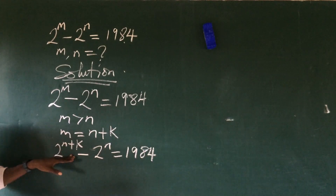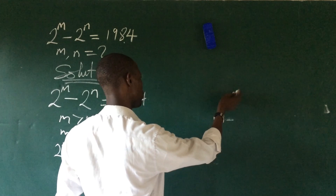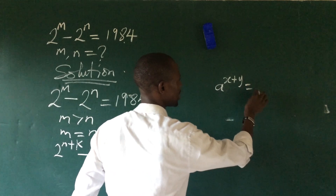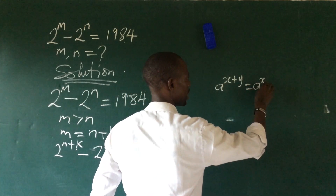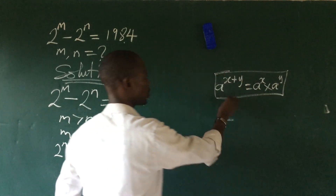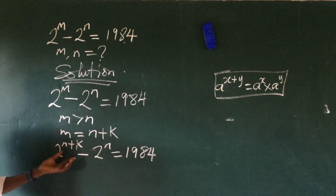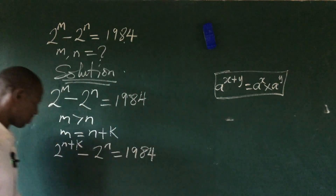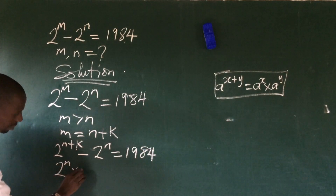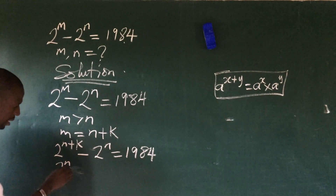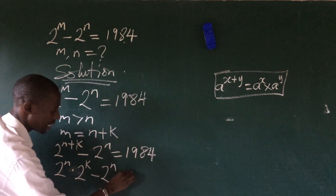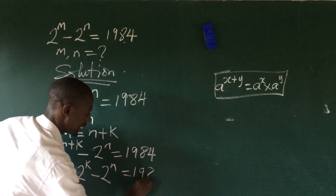We open this up according to the law of indices, which says that a to the power of x plus y equals a to the power of x times a to the power of y. Applying this rule, we rewrite the expression as 2 to the power of n times 2 to the power of k, minus 2 to the power of n, equals 1984.